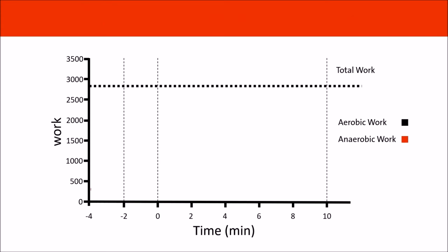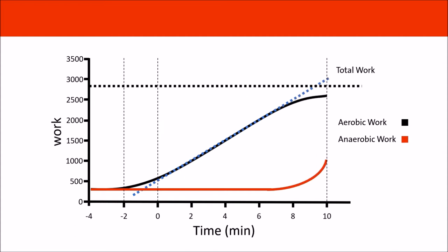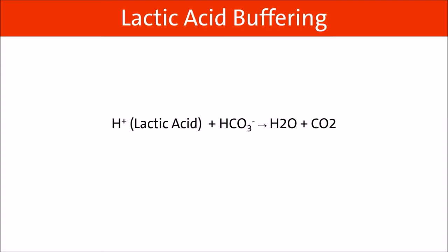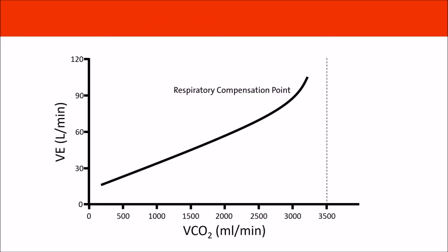Energy is generated by aerobic metabolism when oxygen is abundant. During exercise, when you can no longer supply enough oxygen to your muscles, additional energy is generated by anaerobic metabolism, producing lactic acid as a byproduct. This lactic acid is buffered by bicarbonate in the blood, generating water and carbon dioxide. Eventually there is too much lactate to buffer and acid builds up in the blood, causing acidemia. Your body attempts to get rid of this acid by blowing it off as CO2. The point at which this acid buildup increases ventilation is called the respiratory compensation point.